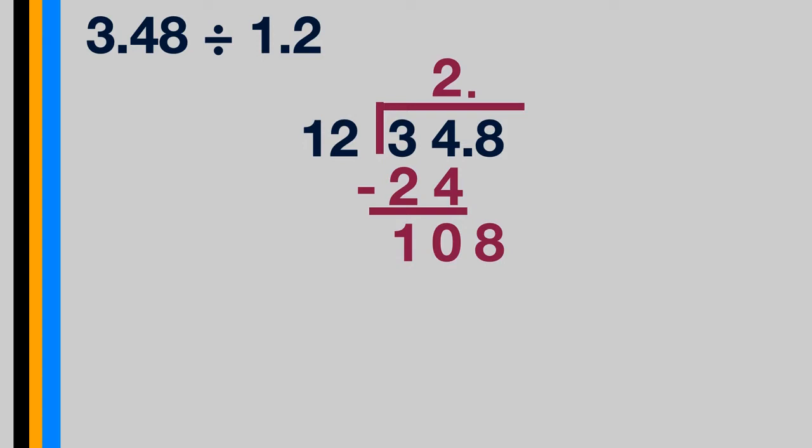12 into 108 is 9. And 12 times 9 is 108. So when we subtract now, we're left with 0. So our final answer is 2 and 9 tenths.